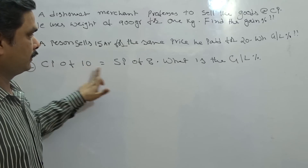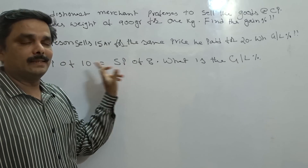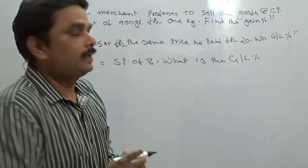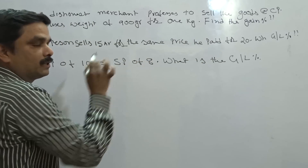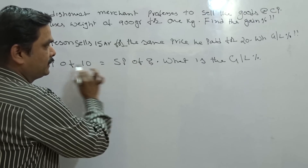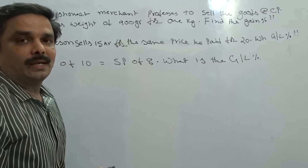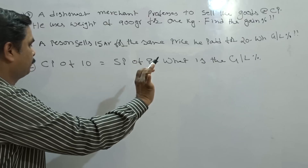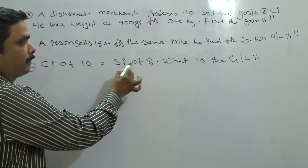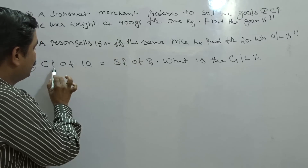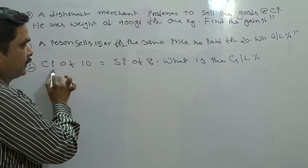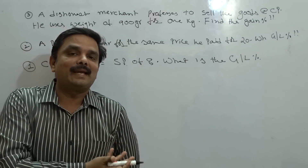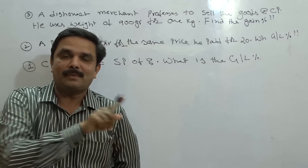If cost price of 10 articles is equal to selling price of 8, then what is the gain or loss percent? In the last video I gave a clear description for this. By seeing this, immediately we can say there is a profit, because the reason is very simple: he is recovering the cost price of 10 by selling only 8 articles, meaning he is gaining the cost of 2 articles every time.